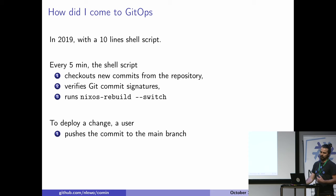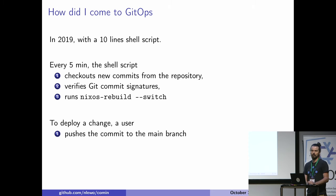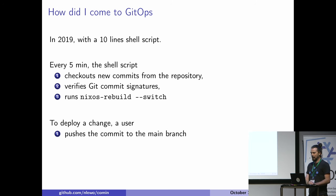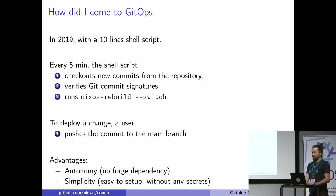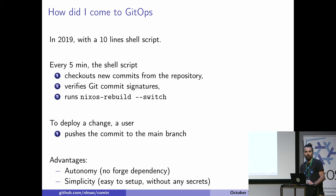We did not want to rely on CI-CD because we wanted to be autonomous. So we started to write a shell script that would be executed every five minutes. What this shell script does is it checks out new commits from a repository, verifies Git commit signatures, and runs nixos-rebuild switch if everything is okay. From the user point of view, to deploy a change, a user just has to push a commit to the main branch. The advantage is autonomy — no external dependencies — and simplicity, especially because you don't have any deployment secrets.